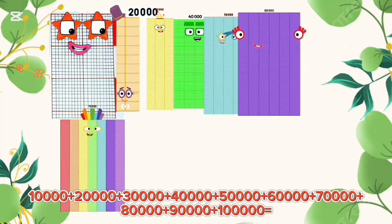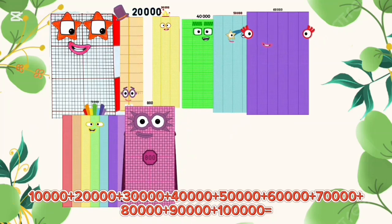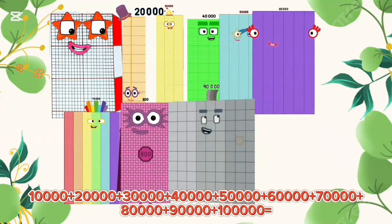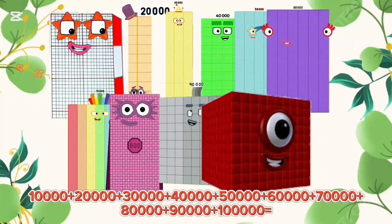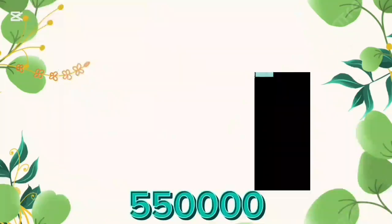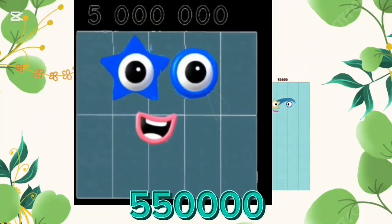70,000 plus 80,000 plus 90,000 plus 100,000 is equal to 550,000.